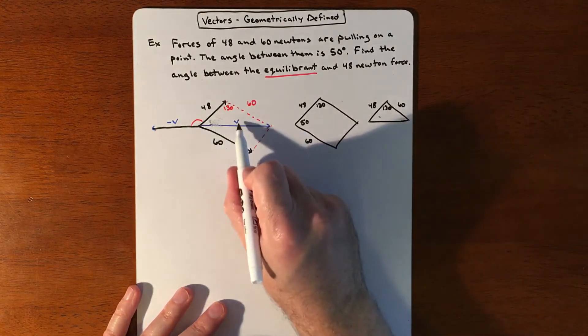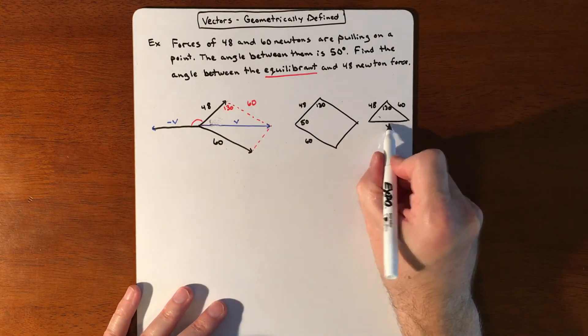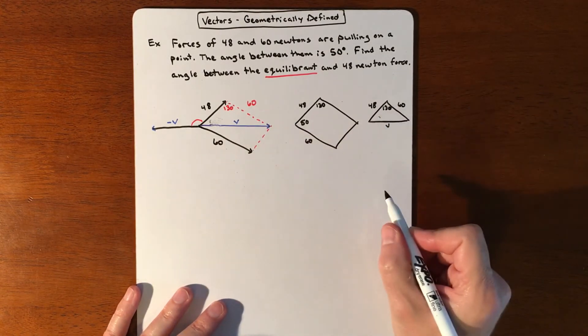So it's going to be a two-step process. So I'm going to figure out this V and then I'll use the V to figure out this angle.